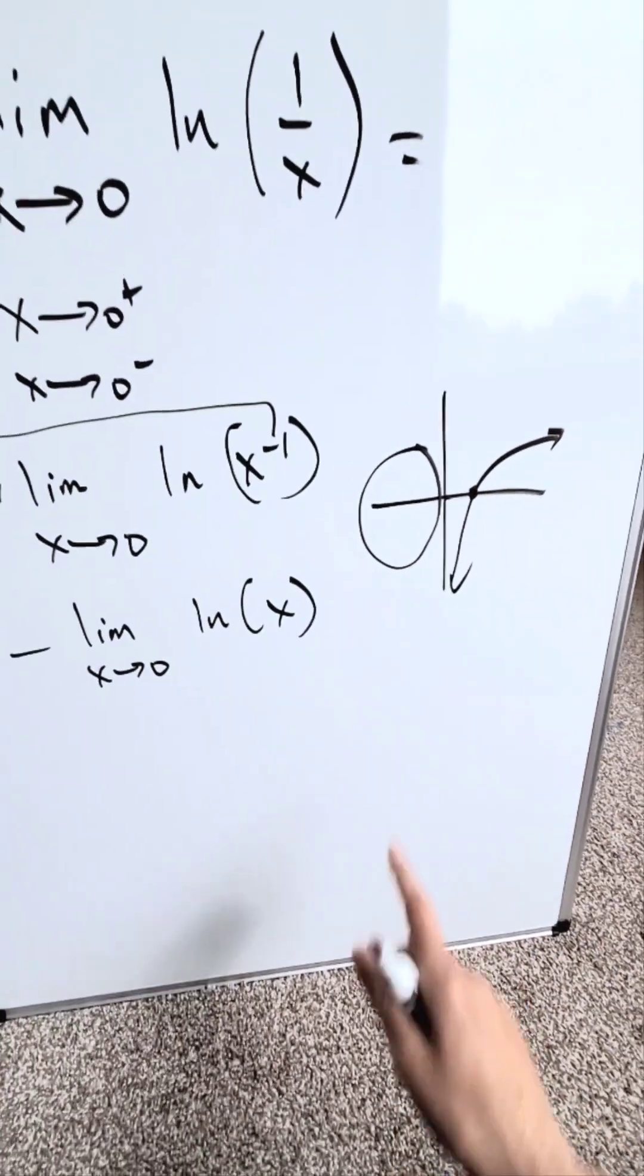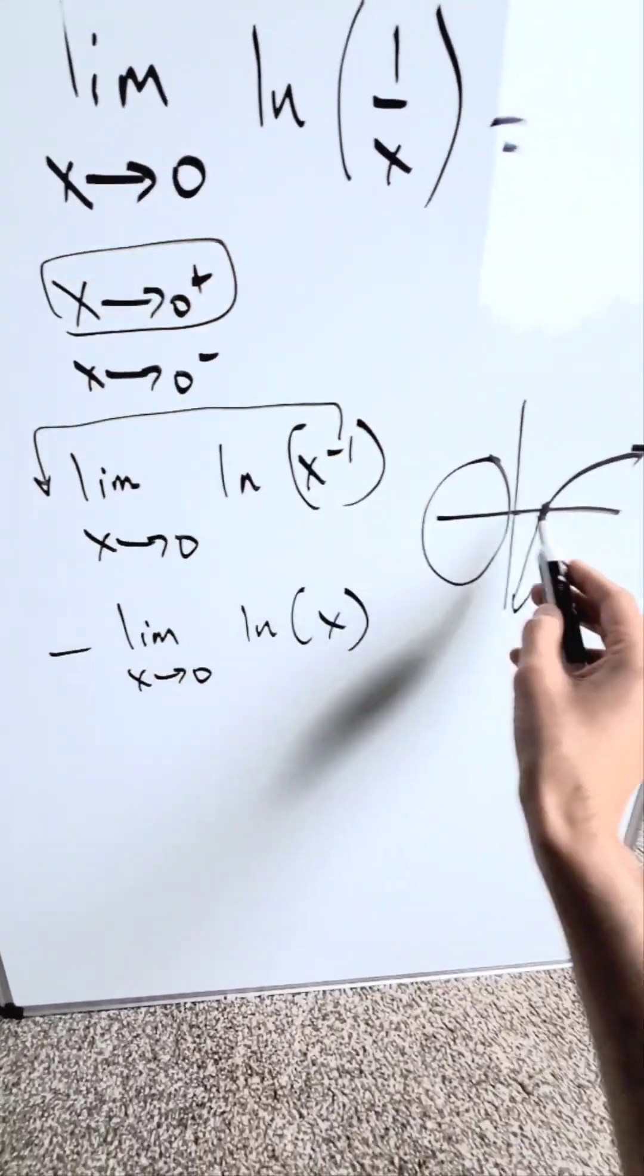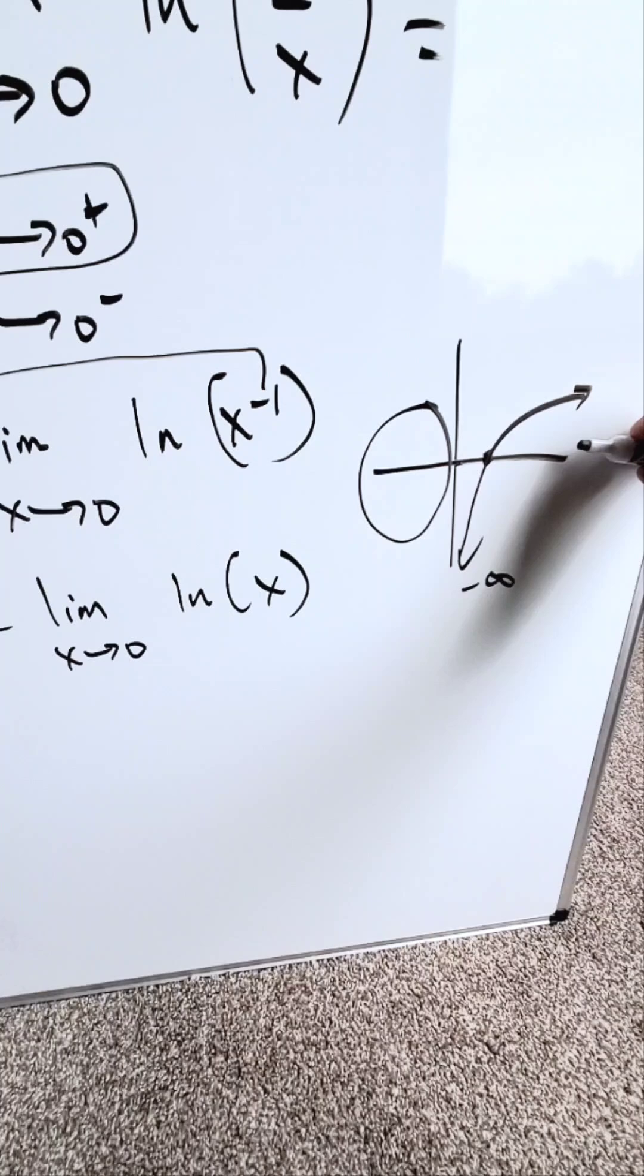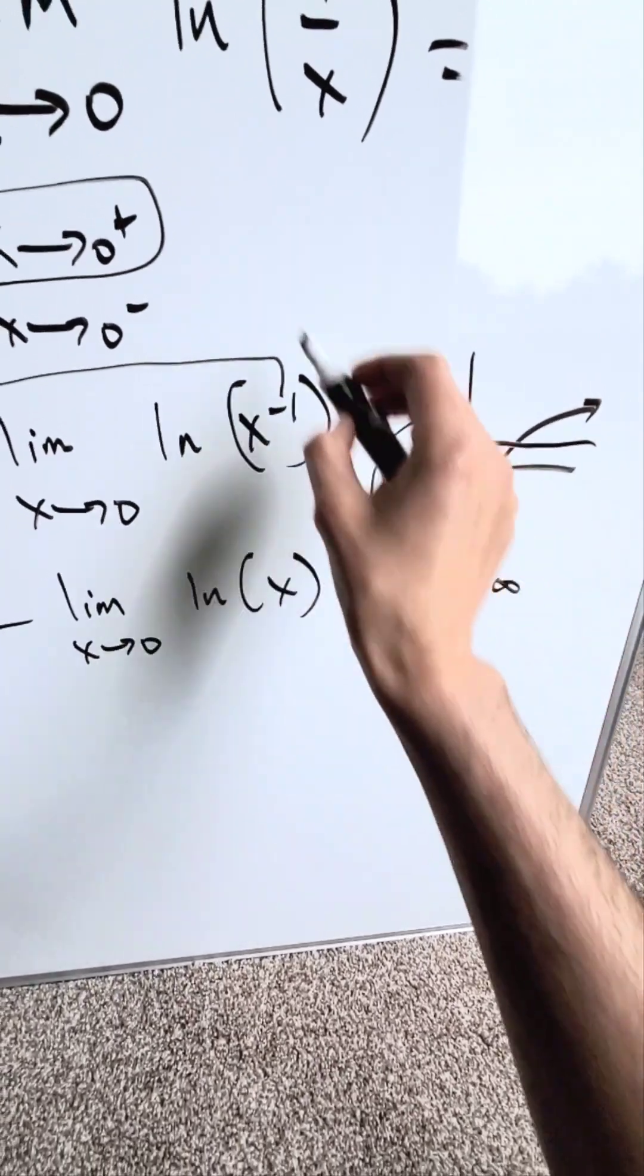How can we evaluate this? Look at x approaching 0 from the right. When looking at this, the function dips down towards minus infinity. As we're approaching 0 from the right, the function dips to minus infinity.